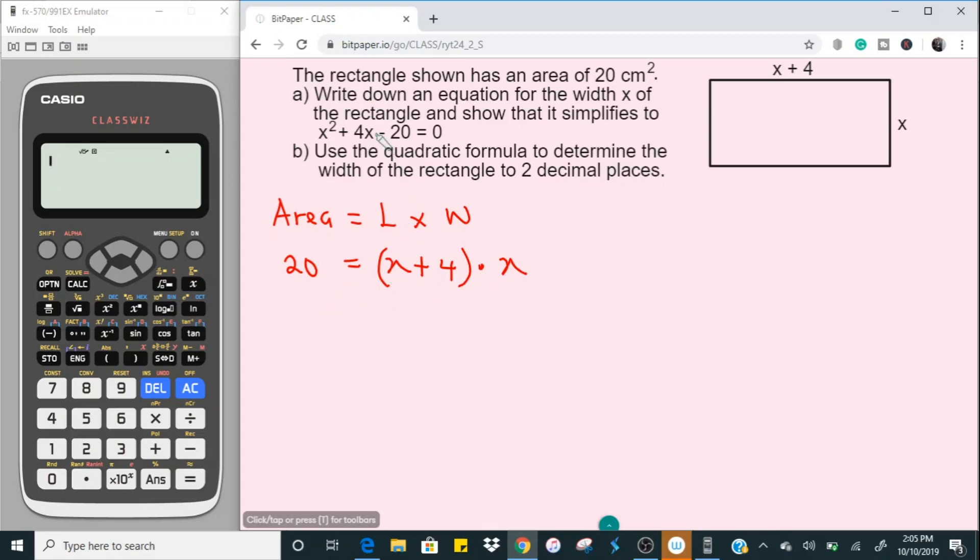Now the second part of question A is to show that it simplifies to this equation here. So I'm going to proceed to continue and then I'm going to expand the bracket here on the right. So this is going to give me x squared and x times 4 gives 4x. That is going to be equal to 20 here on the left.